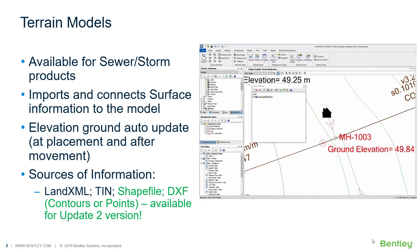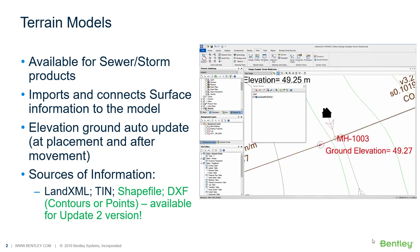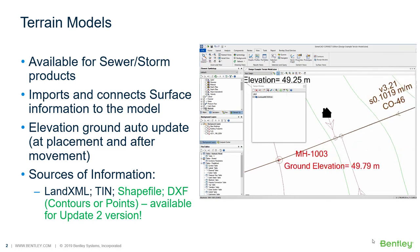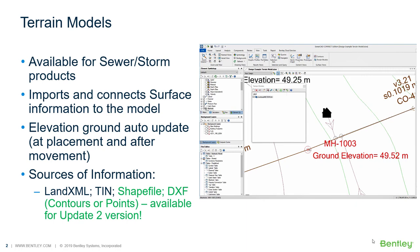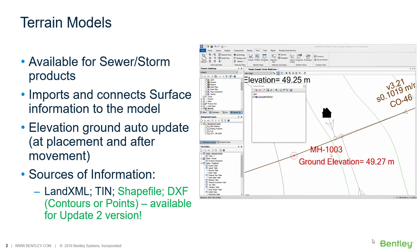This tool imports and connects surface information to your model. Once having a TIN model attached to your model, you will be able to see contours and triangles, and once placing a new element to your network,